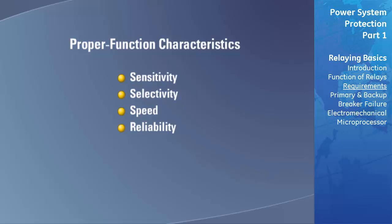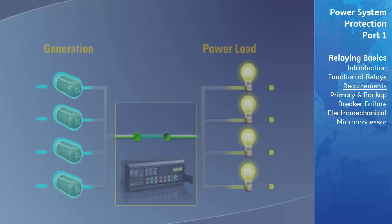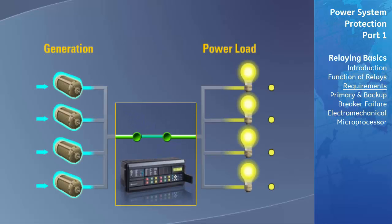The relay must be sensitive enough to operate under the minimum conditions expected. In any power system at various times of the day and during various seasons of the year, the load varies over a wide range. To meet these changing requirements, various combinations of generating sources are switched in and out of the system to provide efficient operation. The relay must be sensitive enough to detect a fault on the system when the minimum amount of power is being generated on the system.